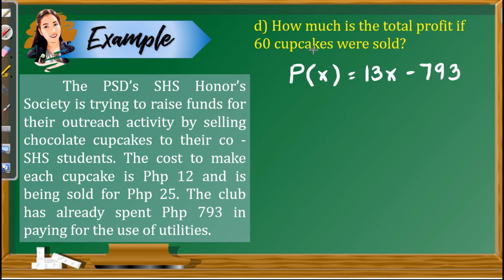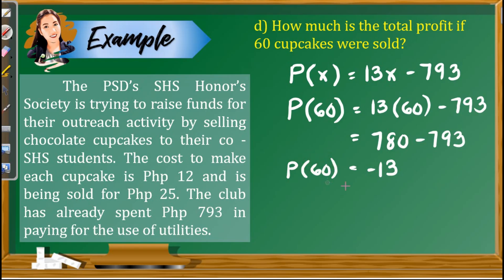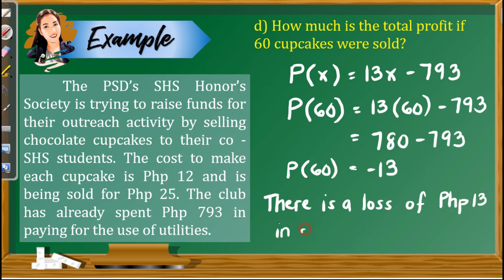Letter D: How much is the total profit if 60 cupcakes were sold? Using the profit function P(x) = 13x − 793, let x = 60. So P(60) = 13(60) − 793 = 780 − 793 = −13. Since the answer is negative, it means there is a loss of 13 pesos if only 60 cupcakes are sold.